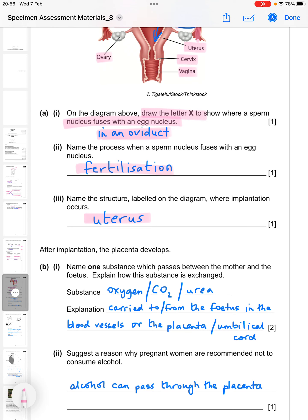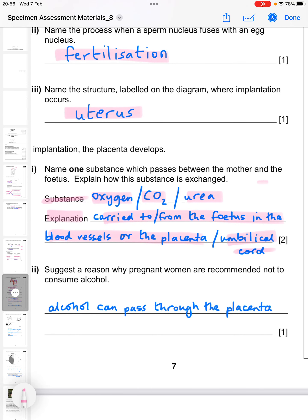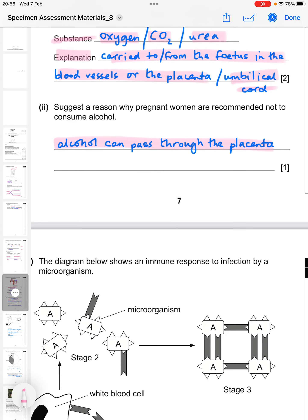After implantation, the placenta develops. Name one substance which passes between the mother and the fetus and explain how the substance is exchanged. So you could have had any of these: oxygen, carbon dioxide, or urea. And you could have said that the explanation is they're carried to or from the fetus in the blood vessels of the placenta or you could have said by the umbilical cord. So one mark for each part. And suggest a reason why pregnant women are not recommended to consume alcohol. Well, very simply, it's because alcohol can pass through the placenta.